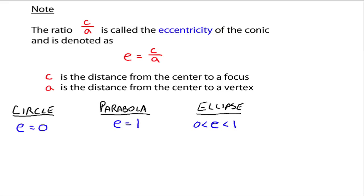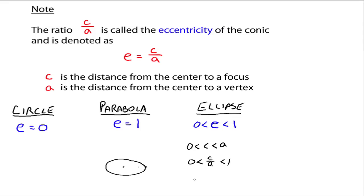For an ellipse, your eccentricity has to be between zero and one, because zero is less than c is less than a on an ellipse. The distance from the center to the vertex is a, and the distance from the center to the focus is c, so c is less than a. That means zero is less than c divided by a, which is less than one, and that's where you get e. So e measures the roundness of the ellipse — the closer e is to zero, the more your ellipse looks like a circle, and when e equals zero it is indeed a circle.